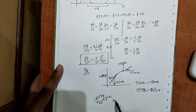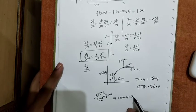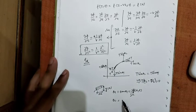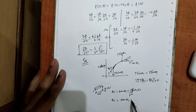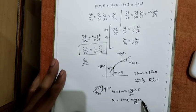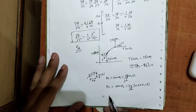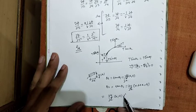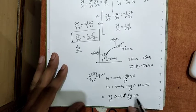By the definition of the tangent, tan θ₁ = ∂y/∂x evaluated at (x, t). And tan θ₂ = ∂y/∂x evaluated at (x + Δx, t), which can also be written as ∂y/∂x|(x,t) + (∂²y/∂x²)·Δx.